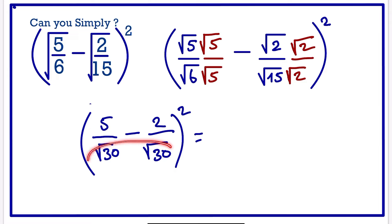Now that we have the same denominator, we can subtract the numerator. This will give us 3 over the square root of 30, all square.